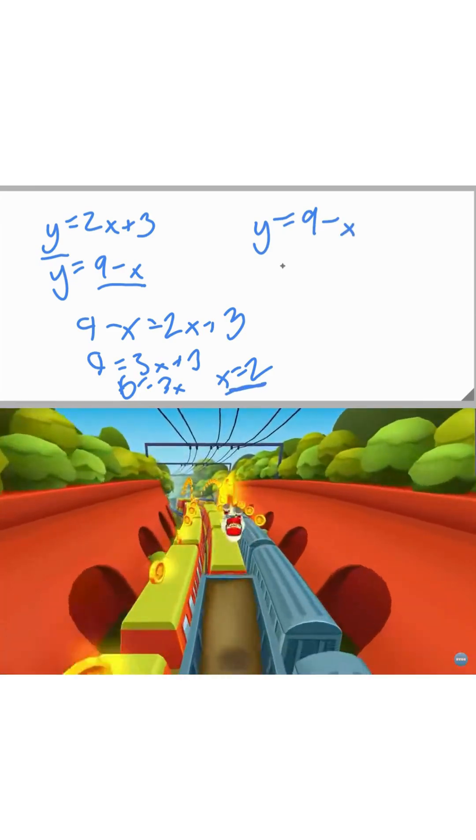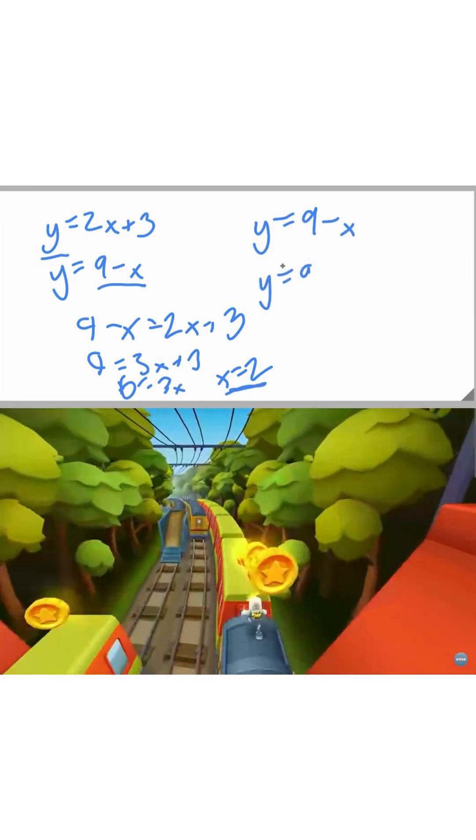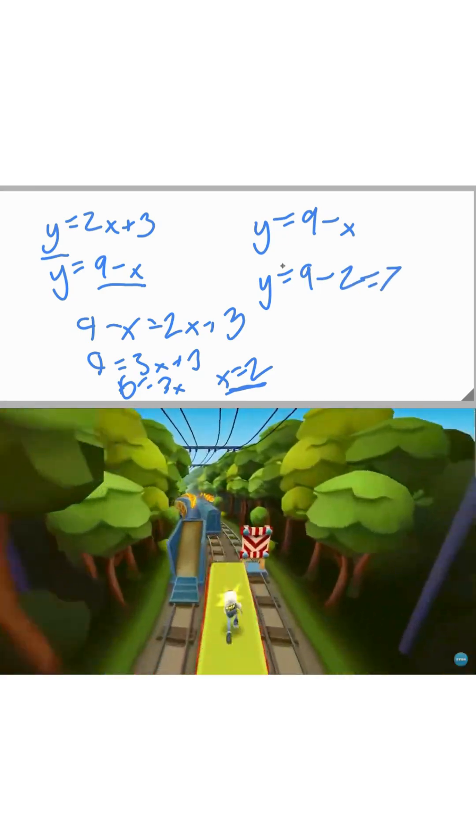And we just plug in our value here for x to get y equals 9 minus 2, and therefore it is equal to 7.